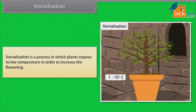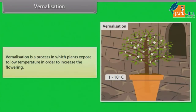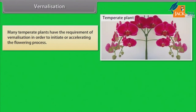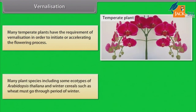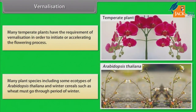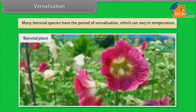Vernalization: Vernalization is a process in which plants are exposed to low temperature in order to increase flowering. Many temperate plants have the requirement of vernalization in order to initiate or accelerate the flowering process. Many plant species, including some ecotypes of Arabidopsis thaliana and winter cereals such as wheat, must go through a period of winter. Many biennial species have a period of vernalization which can vary in temperature.